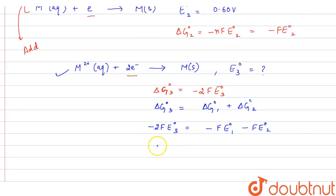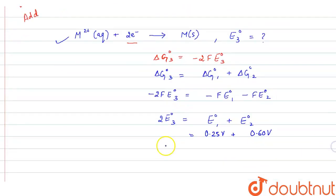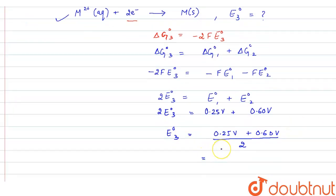Right, so here we get, now from here we get 2E⁰₃ will be equal to E⁰₁ + E⁰₂. Now E⁰₁ is 0.25 volt, 0.25 volt and E⁰₂ is 0.60 volt. Right, so this is equal to 2E⁰₃. So E⁰₃ will be equal to 0.25 volt + 0.60 volt divided by 2. So its value comes out to be 0.425 volt.